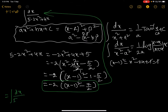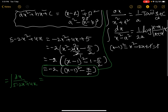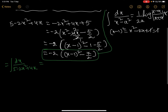Substituting back, the integral of dx divided by (5 minus 2x squared plus 4x) equals the integral of dx divided by minus 2 times [(x minus 1) whole square minus 7/2].